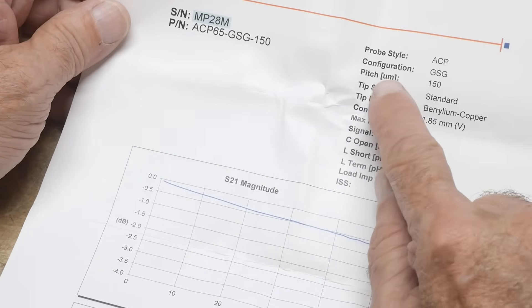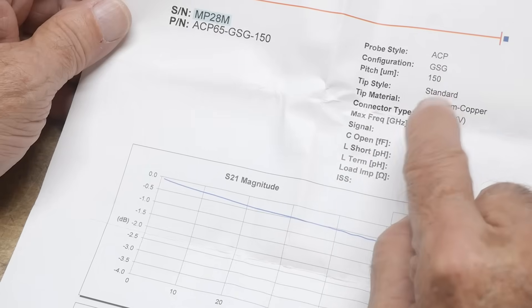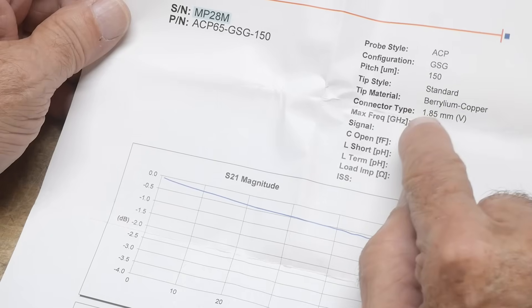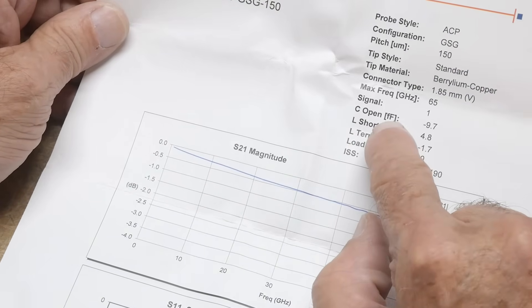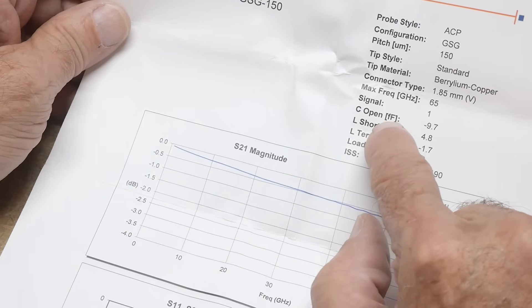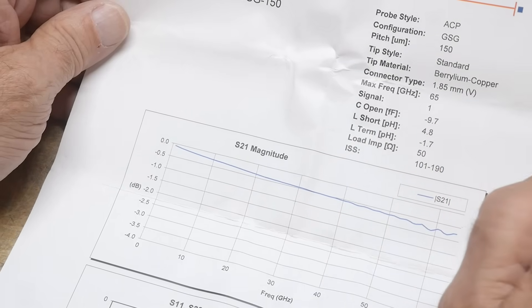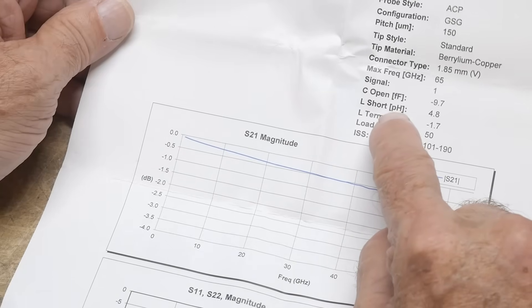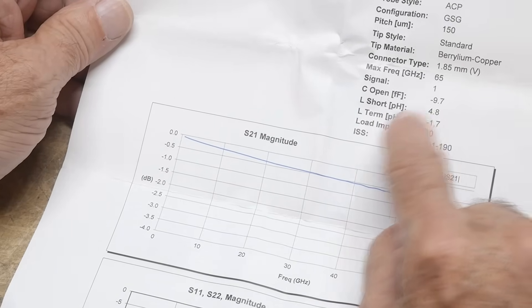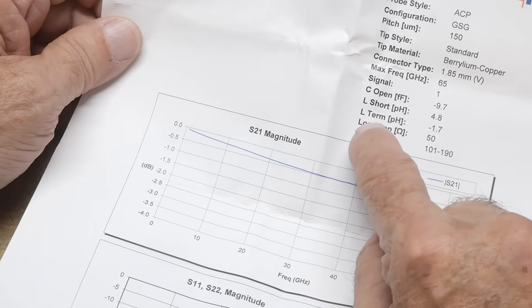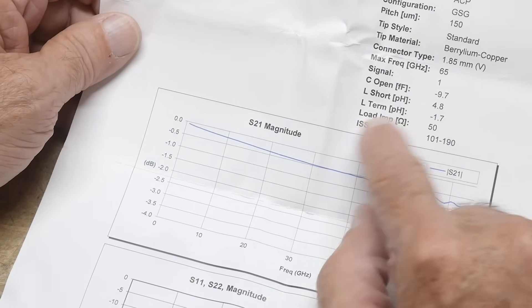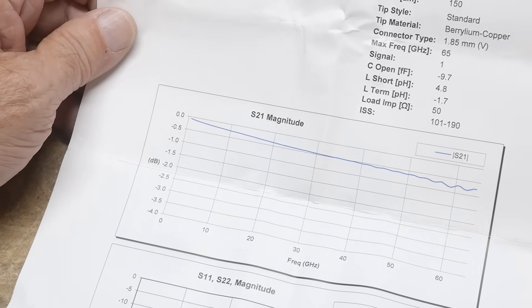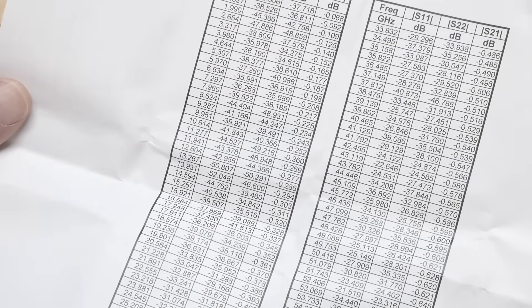The pitch is 150 microns. The tip material is beryllium copper. Connector: 1.85 millimeters, 65 gigahertz. Here is the capacitance: 9.7 femtofarads. Picohenries: 4.8 picohenries of short termination. Loading pins: 50 ohms.